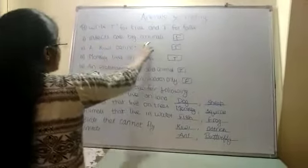First: insects are big animals — true or false? False. Second: Kiwi cannot fly — true or false? True.